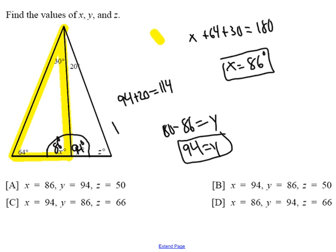And 180 take away 114 is 66, so Z is 66. So X is 86, Y is 94, and Z is 66, so I'm left with choice D.